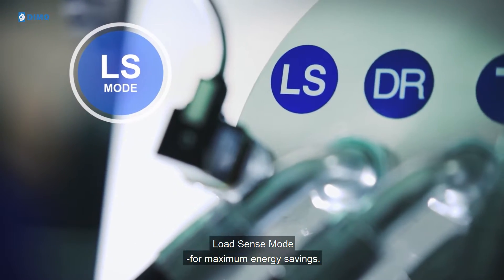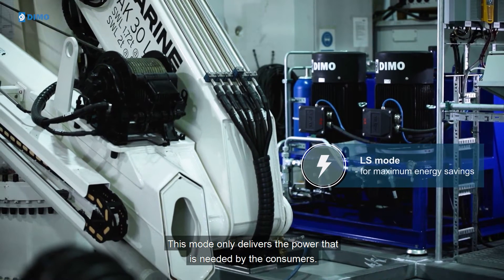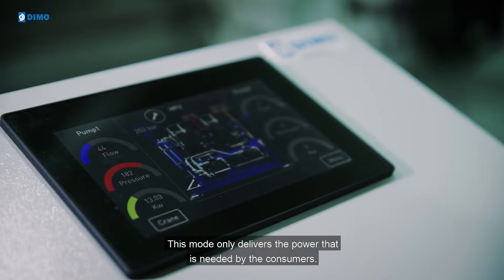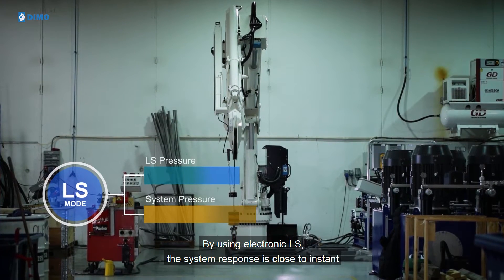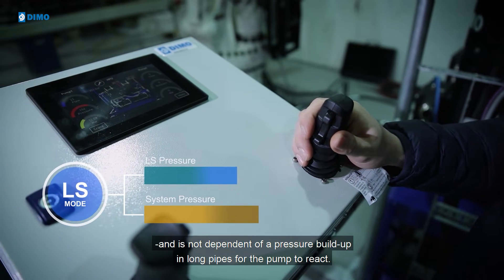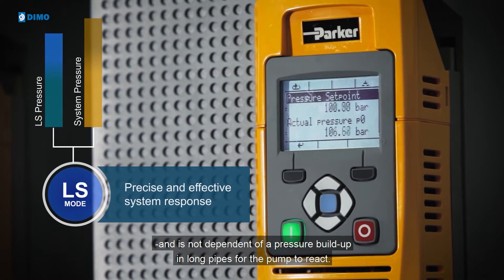Load Sense mode for maximum energy savings. This mode only delivers the power that is needed by the consumers. By using electronic LS, the system response is close to instant, and is not dependent on a pressure build-up in long pipes for the pump to react.